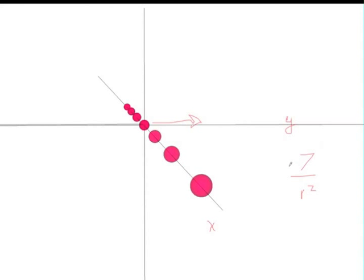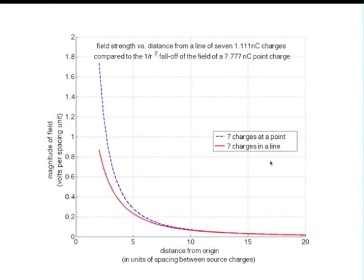How much like a point charge does it look at different distances? So in the next slide, there's a graph that shows you the results of two different calculations. The red line shows you the calculation that you would get if you used the summation formula for seven charges in a line. So it is an exact calculation. The blue line, on the other hand,